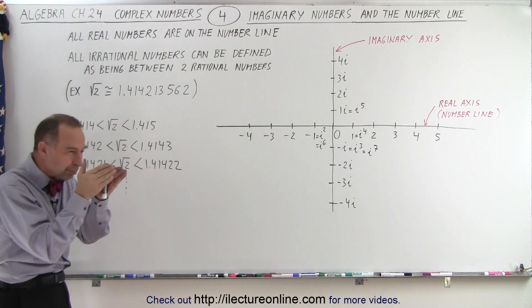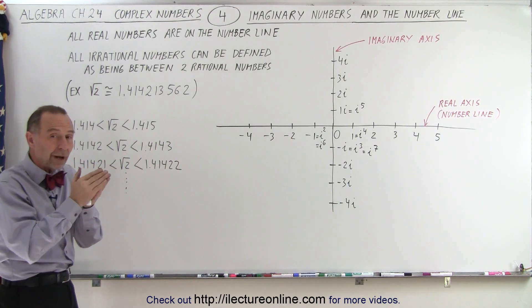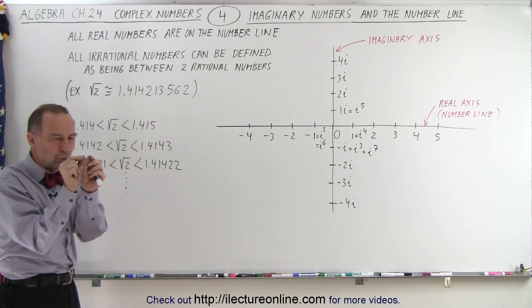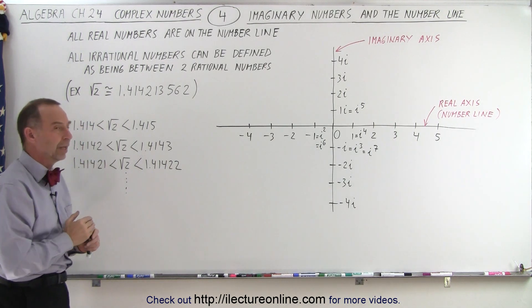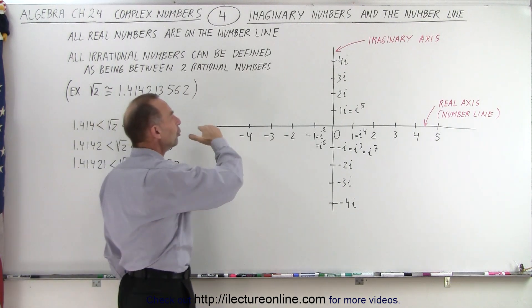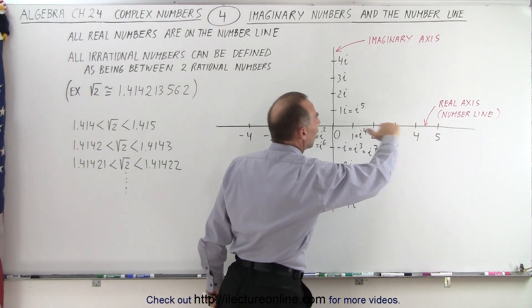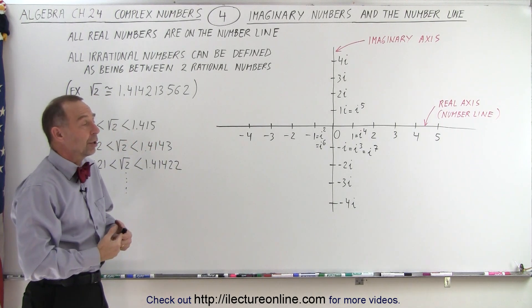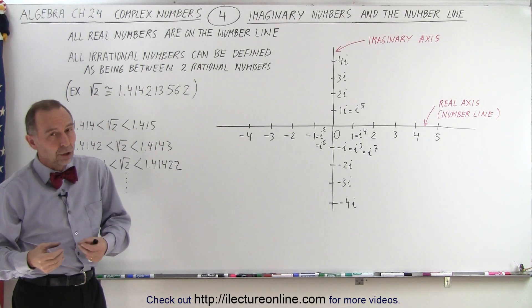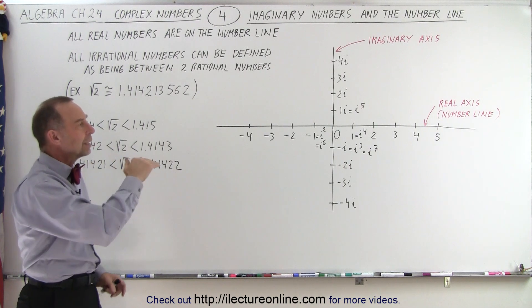In other words, we can almost pinpoint the exact value of an irrational number by placing it between two numbers that are really, really, really close to the irrational number. So that's how we define all numbers, all real numbers on the real number line. We don't call it the real number line. We simply call it the number line. But we really mean the real number line or the real axis.